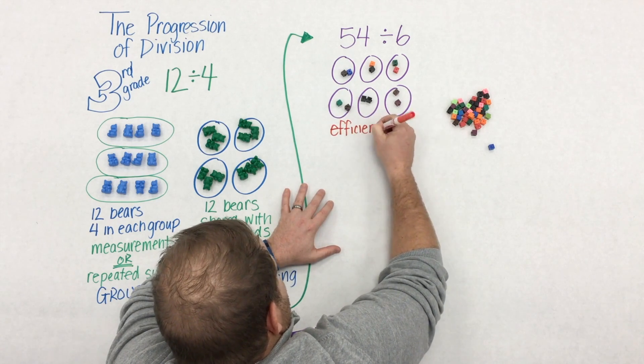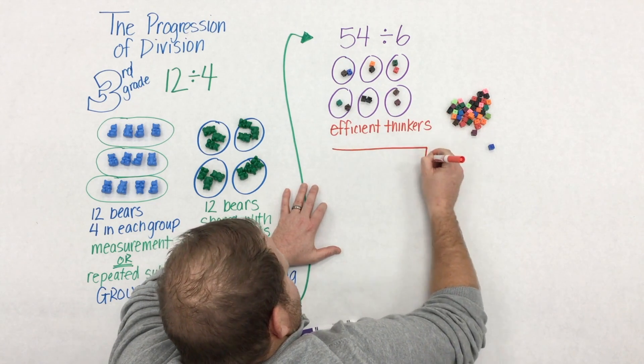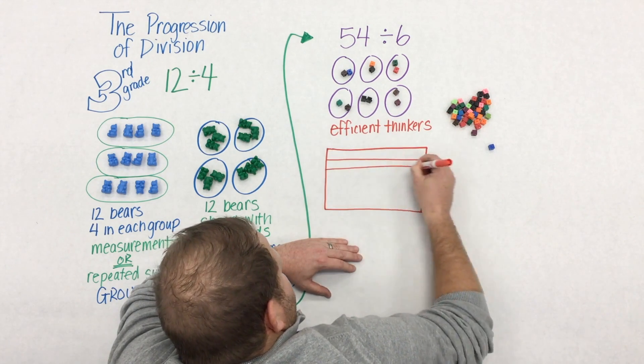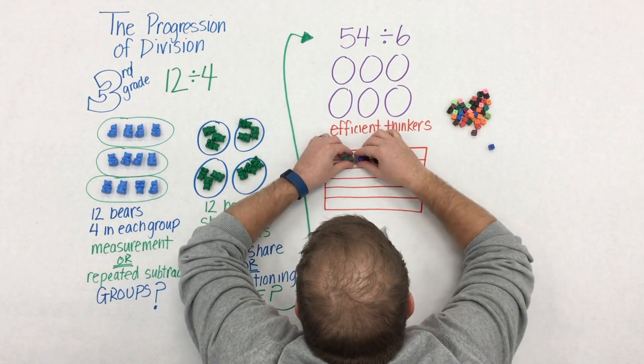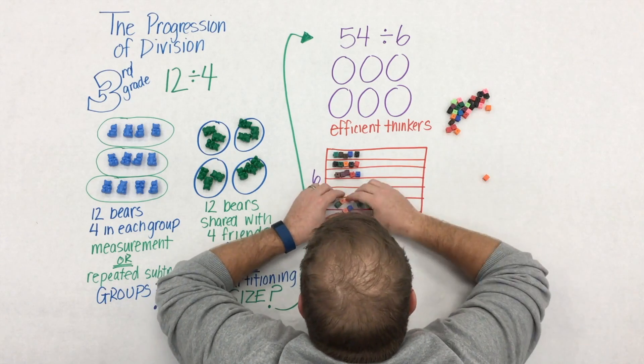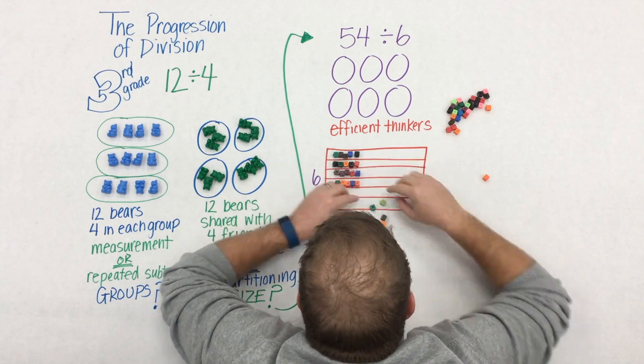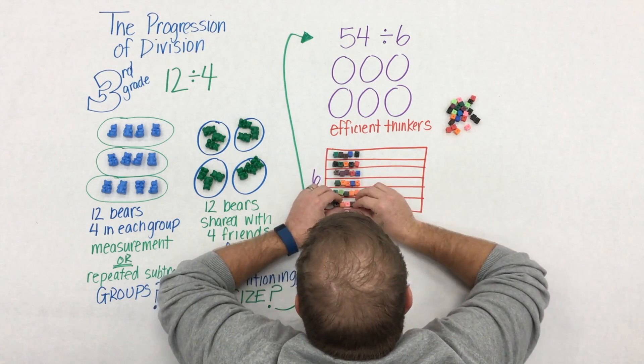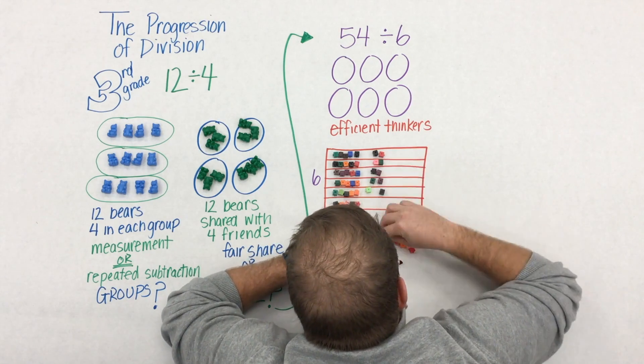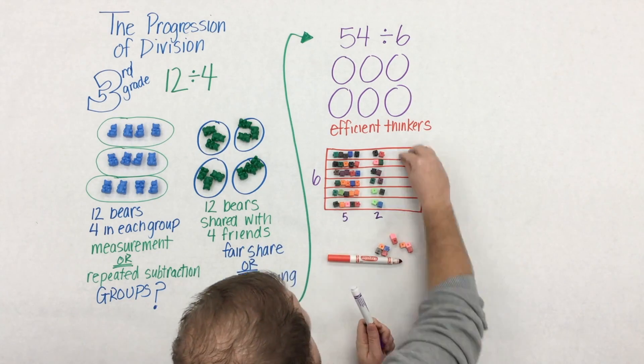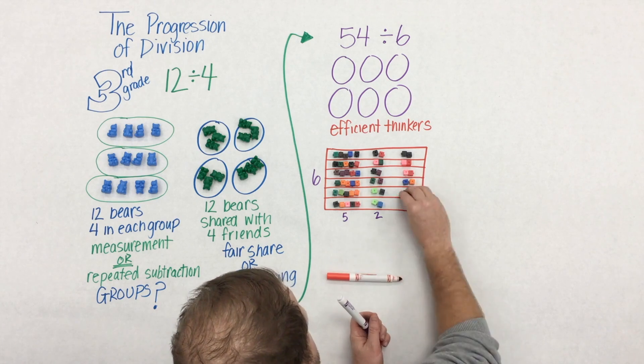But 54, that's going to take a long time using fair share. So we need to put students in a place where they begin to become more flexible and efficient thinkers. So they might begin, instead of doing one by one, they might say, I'm going to take out five and put five in each group to start. Then with their remaining pieces, they might put two in each group, and so on.